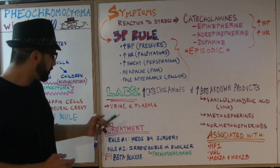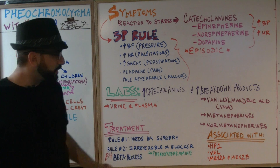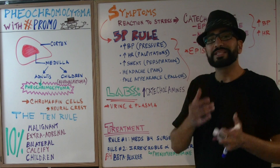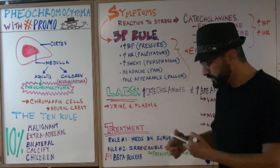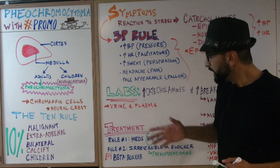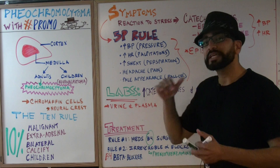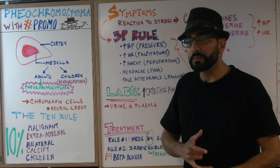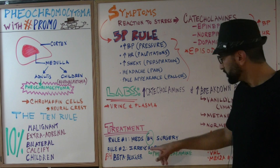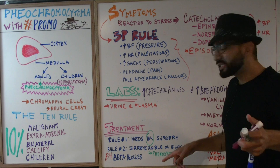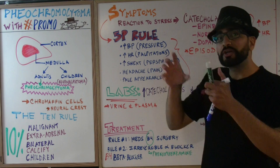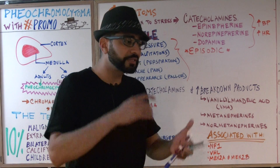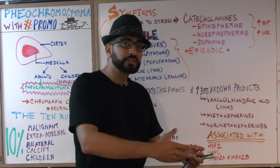What is the treatment? There are two main rules to focus on. Rule number one: we need to do medications as well as surgery, but you have to remember medications before surgery. Now, what are these medications? That's the second rule: there are two types of medications — alpha blockers and beta blockers — but definitely use the alpha blockers first. You're going to use an irreversible alpha blocker, most likely phenoxybenzamine, prior to using the beta blocker. Why is that important? You don't want to induce a hypertensive crisis in the patient. So: alpha blocker first, then beta blocker, then surgery.